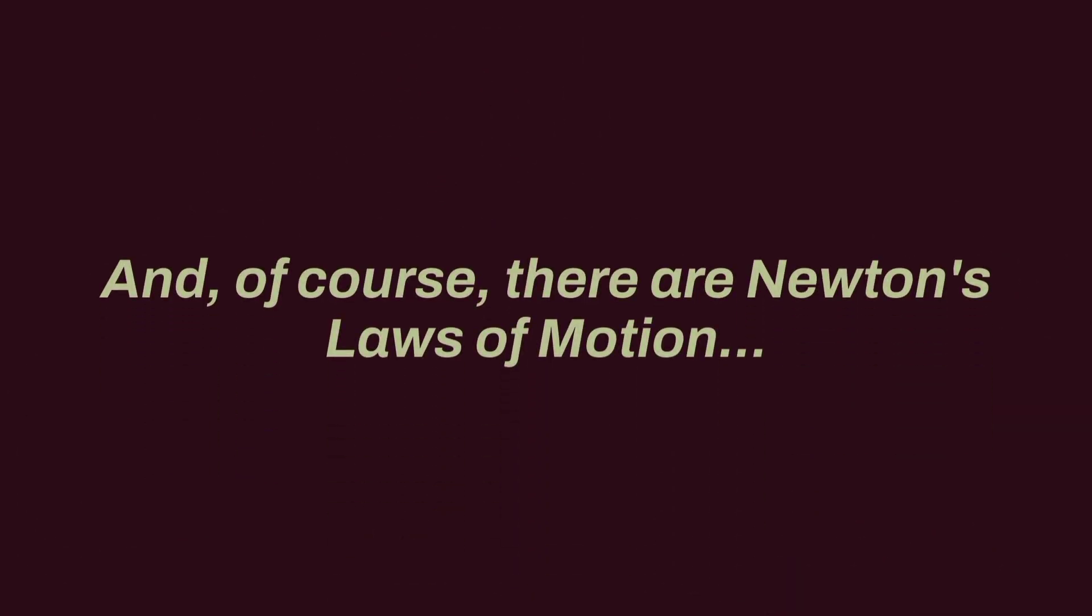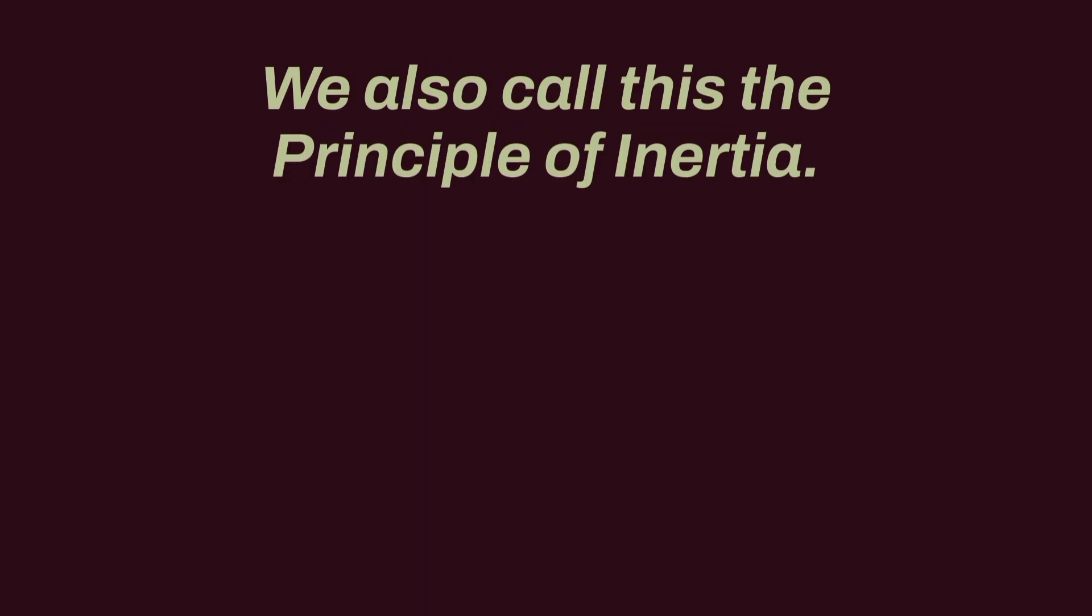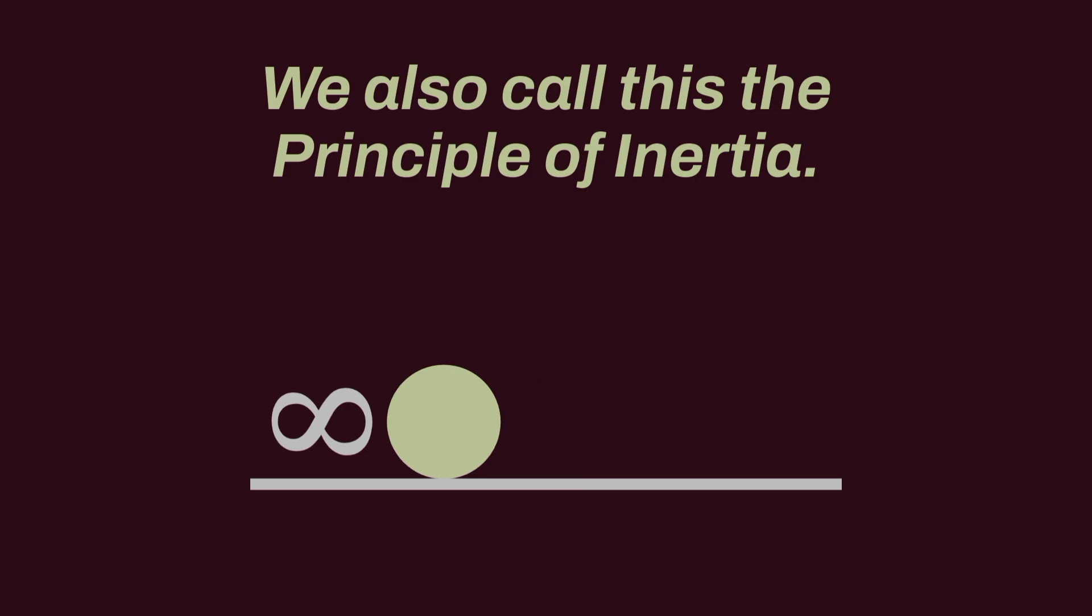With this formula, Newton showed that gravity isn't unique to earth. It's valid throughout the entire universe. And of course, there are Newton's laws of motion. First law: Unless an external force is applied to an object, that object will either remain at rest or continue to move at a constant velocity. We also call this the principle of inertia. So when you roll a ball, if there were no air friction and other forces, that ball would keep rolling forever.